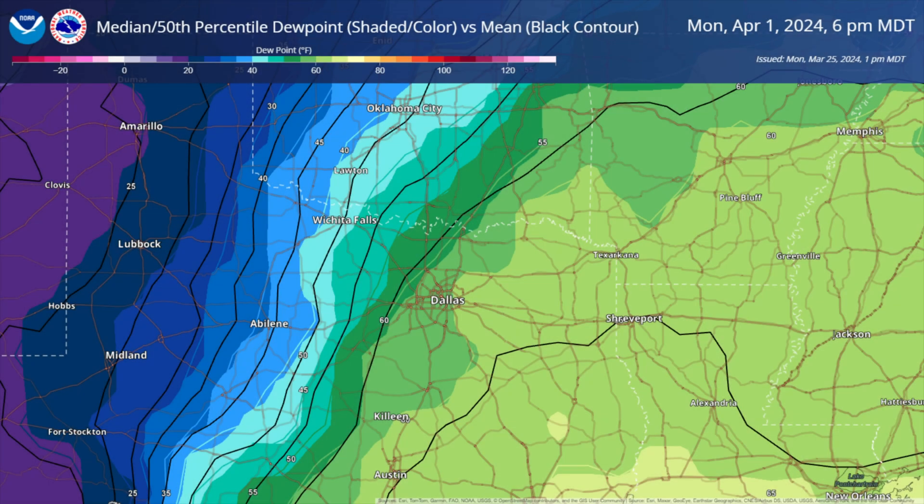Skew can also be seen on plan view maps within DESI, as long as the correct parameters are set up for viewing. We can see that this image shows color shading and color contours for dew point, and the black contours are the mean dew point.